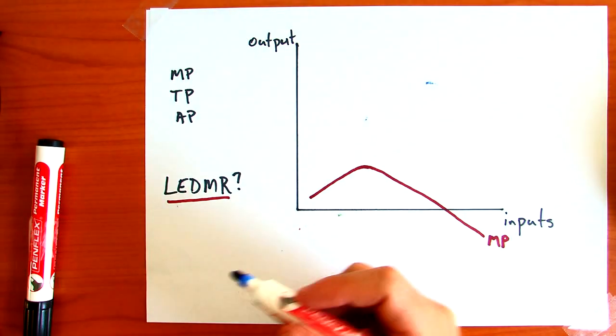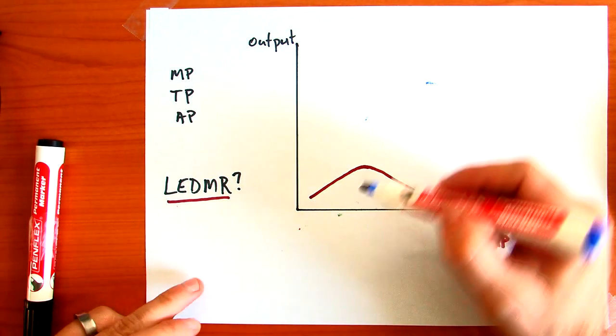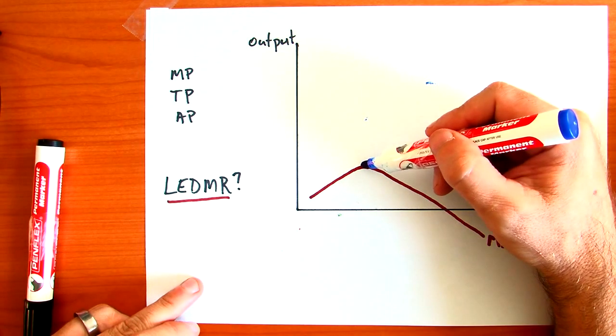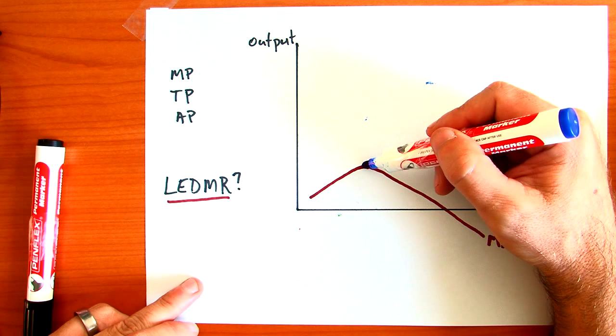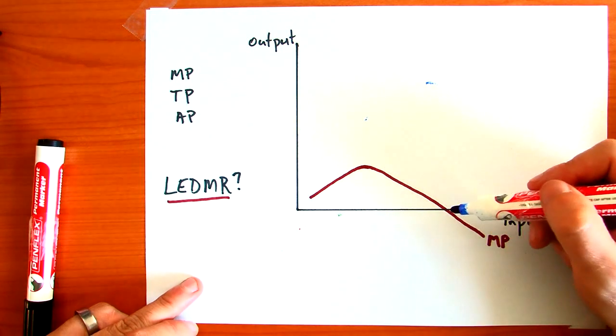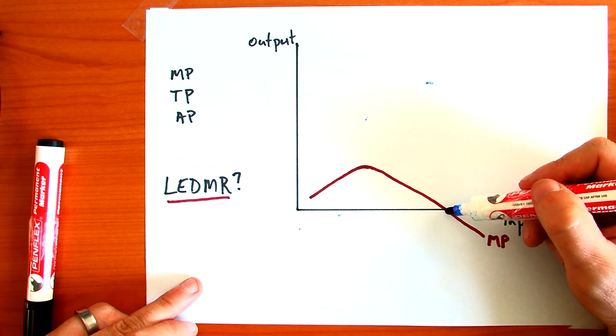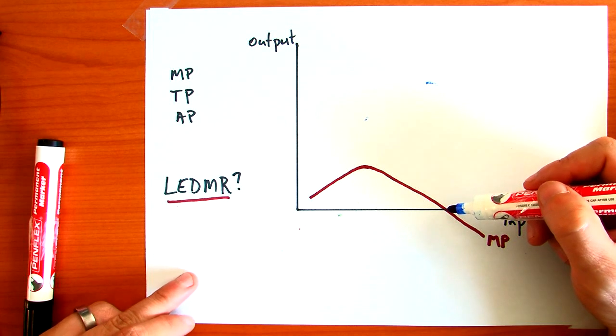We're going to look at total production next. Total production, remember, correlates—one part of it correlates to the top part of marginal production here, and another part correlates to where marginal production intersects the x-axis, or where it becomes zero.